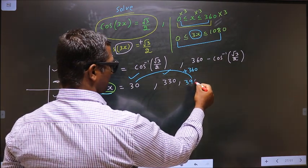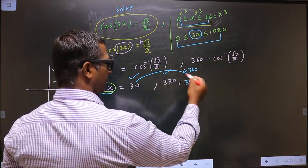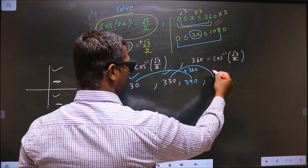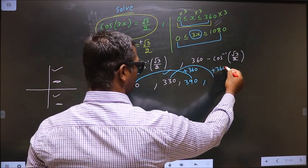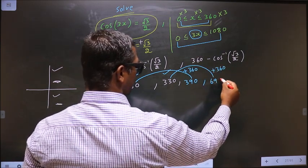So you get 390. Now to get another value, you add 360 to this. So you get 690.